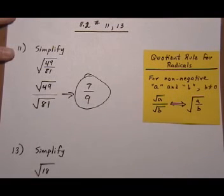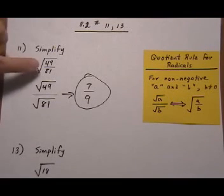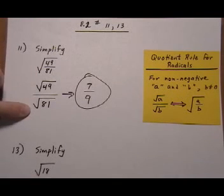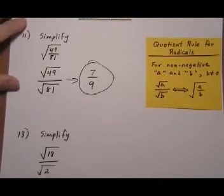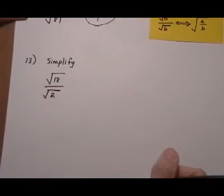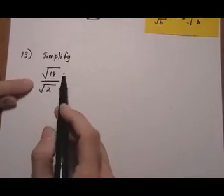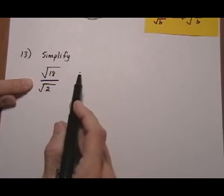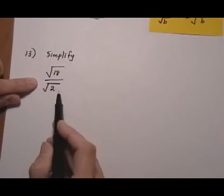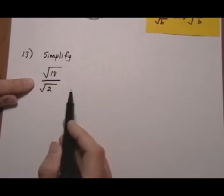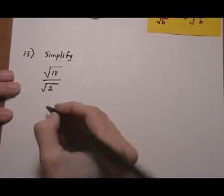So you pretty much do whatever's convenient. If it helps to put them under separate roots, you do that. In number 13, we'll see the opposite situation—it's going to help to put them under a common root. We could try to simplify √18, but it's going to be a lot easier if we just recognize that 18 divided by 2 is 9, and 9 is a perfect square.